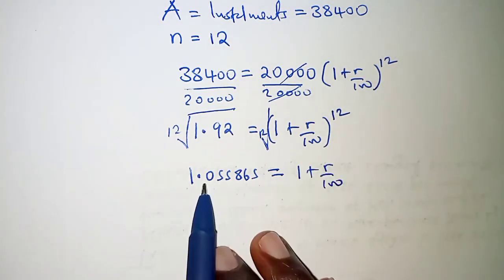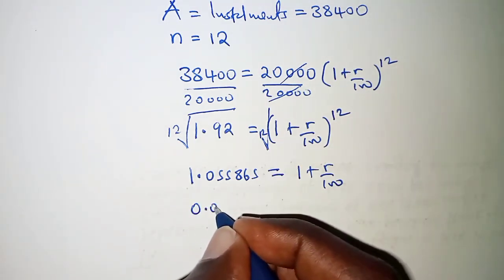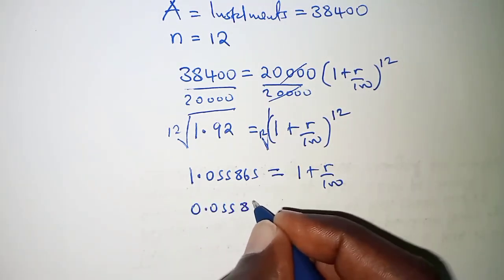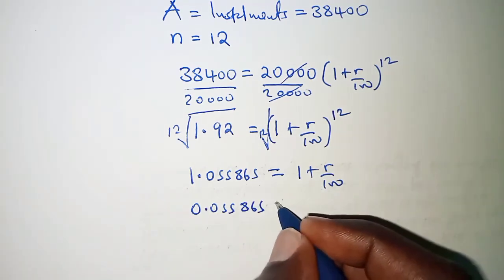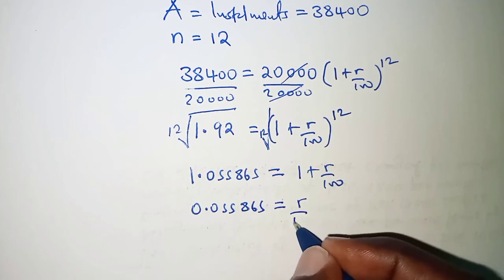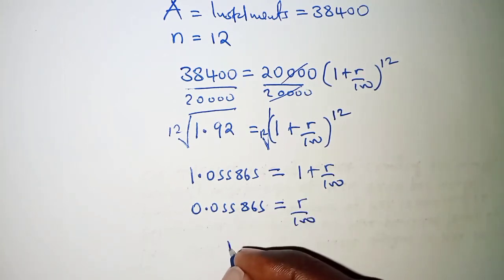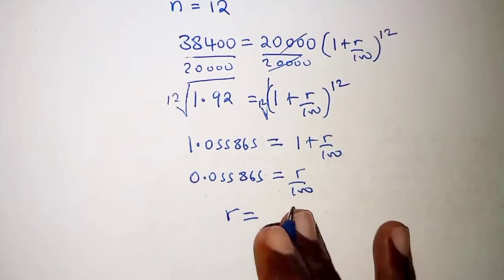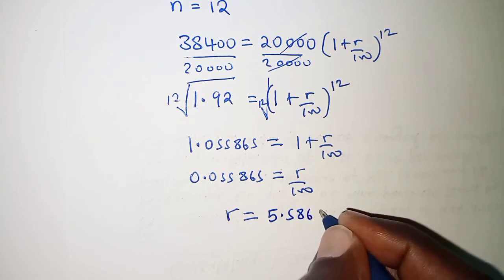So taking 1 to the left hand side we subtract and have 0.055865 equals r over 100. And then cross multiplying, r becomes 5.5865.